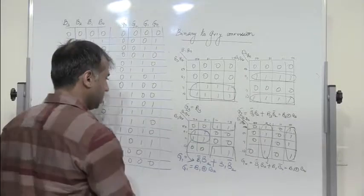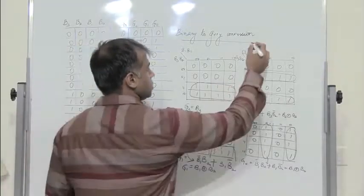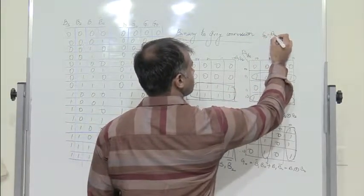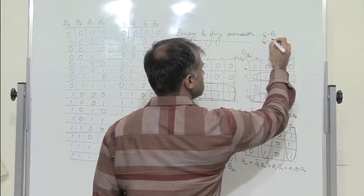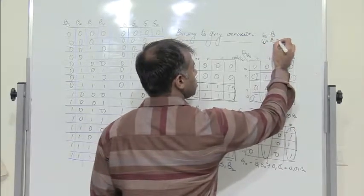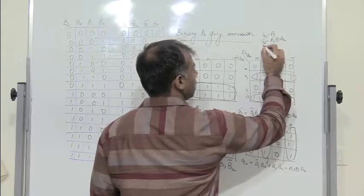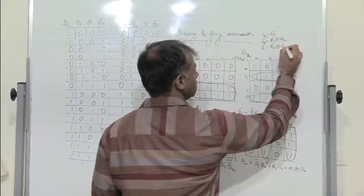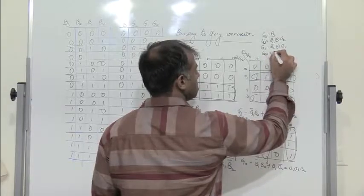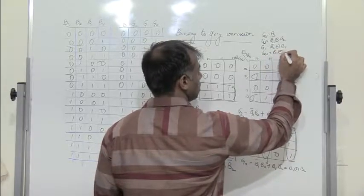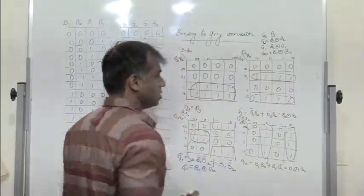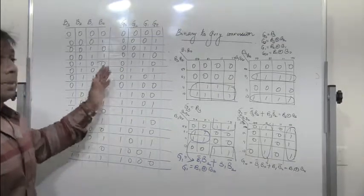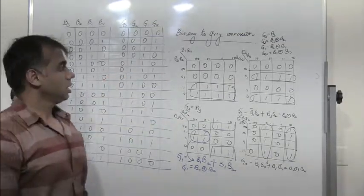So let me write the expressions for binary to gray conversion: G3 = B3, G2 = B3 XOR B2, G1 = B2 XOR B1, and G0 = B1 XOR B0. These are the expressions to convert binary to gray.